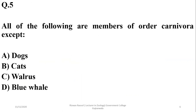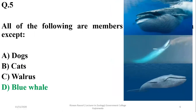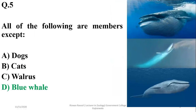Question 5: All of the following are members of order Carnivora except — dogs, cats, and weasels belong to order Carnivora. But the blue whale is actually a Cetacean, a diving mammal. So the right option is D.